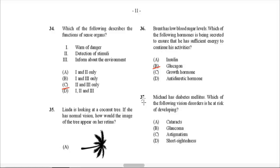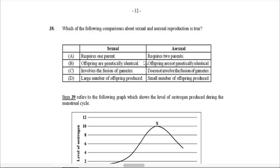Question 37: Michael has diabetes mellitus. Which vision disorder is he at risk of developing? The one he would be most at risk of is cataracts. Diabetics tend to suffer from cataracts more — it has to do with damage to blood vessels and damage to the lens, since cataracts affect the lens and make it opaque. Diabetics tend to have issues with a damaged lens, meaning light rays can't pass through properly, causing vision problems.